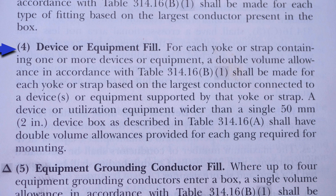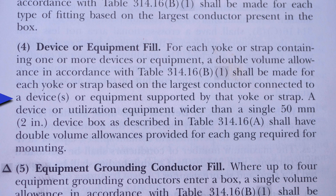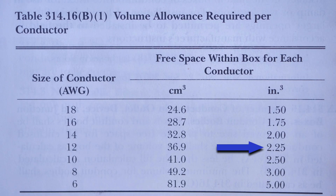Here we are at NEC 314.16B4, device or equipment fill. For each yoke or strap containing one or more devices or equipment, a double volume allowance in accordance with table 314.16B1 shall be made for each yoke or strap based on the largest conductor connected to a device or equipment supported by that yoke or strap. So our switch will get a double volume allowance and our receptacle will get a double volume allowance. Our largest conductors are 12 gauge, so it's 2.25, and we have two volume allowances for the switch and two for the receptacle — 2.25 times 4 equals 9 cubic inches.